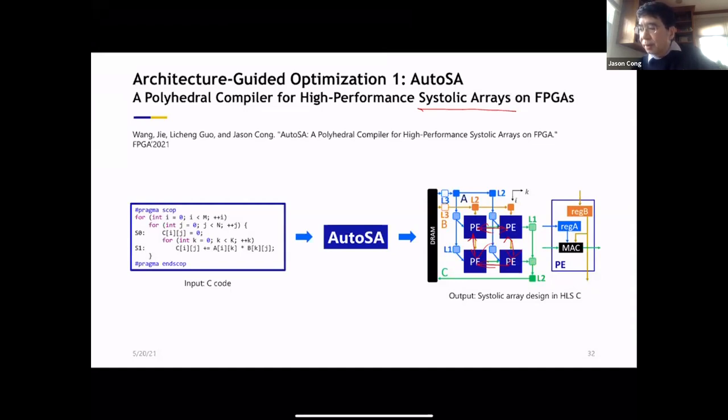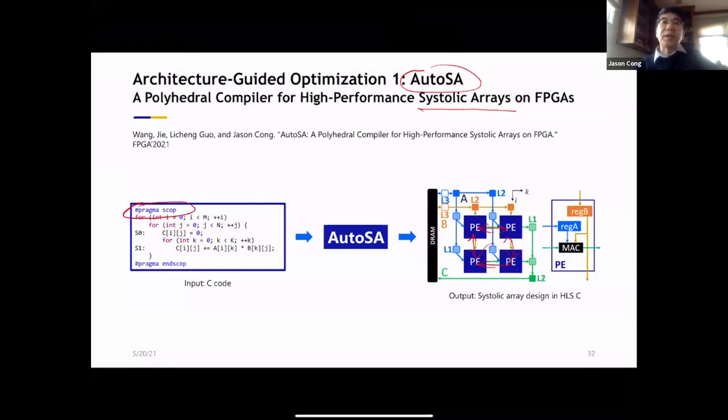So now we have this tool called AutoSA, it's fully open source, you can download it. Just adding one pragma, basically pragma autosa scope. We use the polyhedral model. Under that, nested C-loops can be compiled into a systolic array. Not only just one, we can actually compile into millions of systolic arrays and pick the best ones for you.